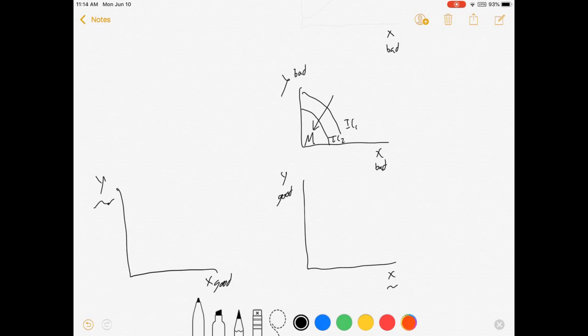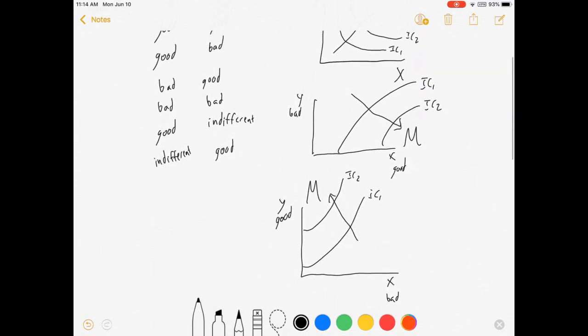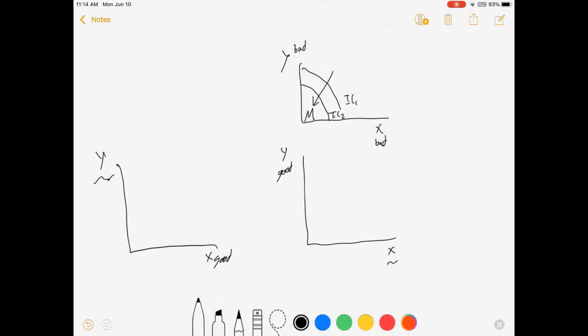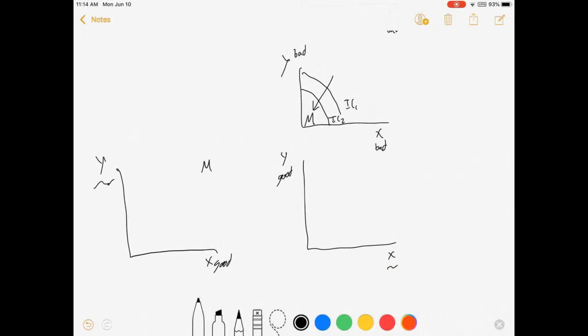My utility function will be increasing if X is good, so my mountain is over here somewhere. But it doesn't really matter how much Y I have. So my mountain doesn't have a peak, it's more like just this line.